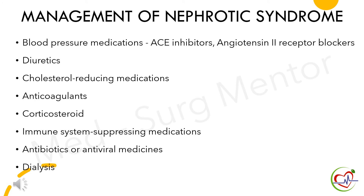Now let's move on to the management of nephrotic syndrome. Treatments include blood pressure medications such as angiotensin-converting enzyme inhibitors and angiotensin II receptor blockers, diuretics, cholesterol-reducing medications, anticoagulants, corticosteroids, immunosuppressants, antibiotics or antiviral medications, and dialysis.